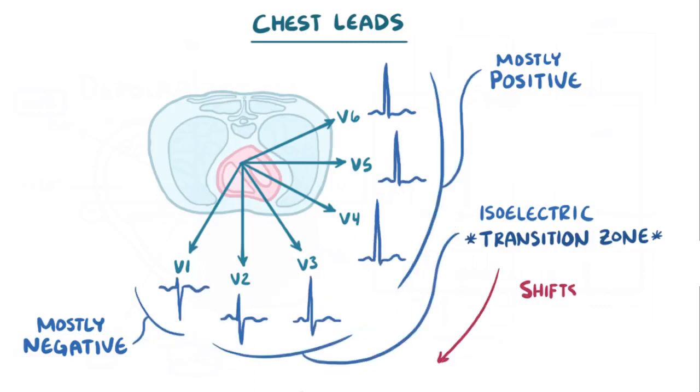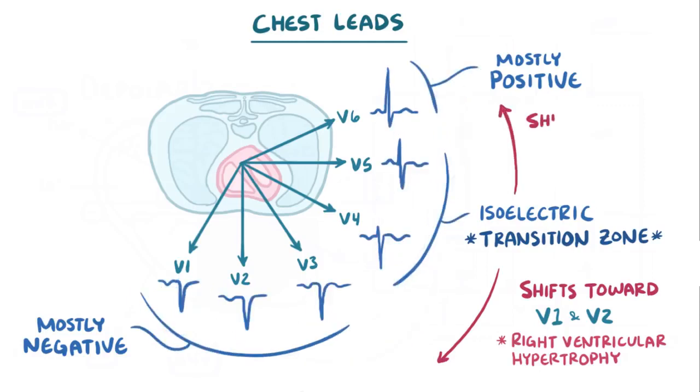If that transition zone shifts toward V1 or V2, then it suggests that the heart might be rotated to the person's right, which can happen if the right ventricle is hypertrophied. On the flip side, if leads V5 or V6 look isoelectric instead of positive, it suggests that the heart might be rotated to the person's left, which can happen if the left ventricle is hypertrophied.